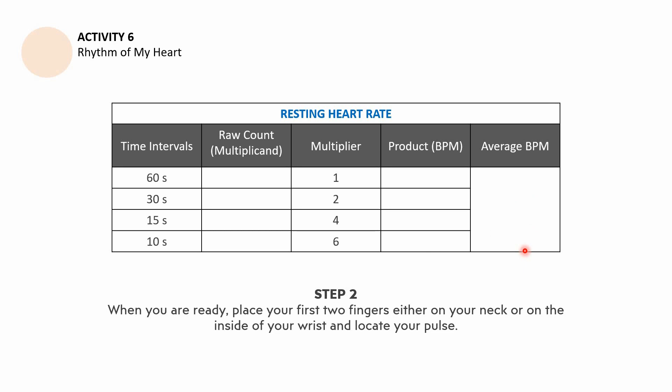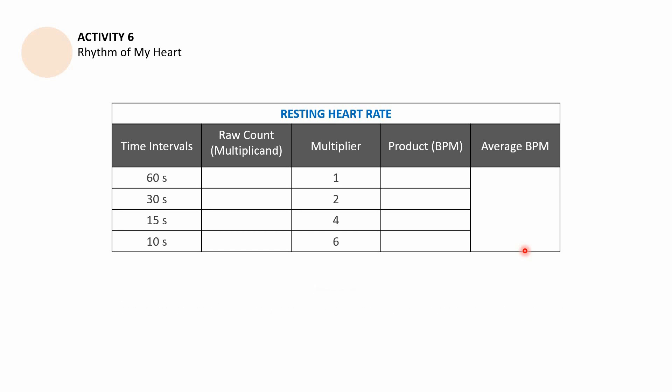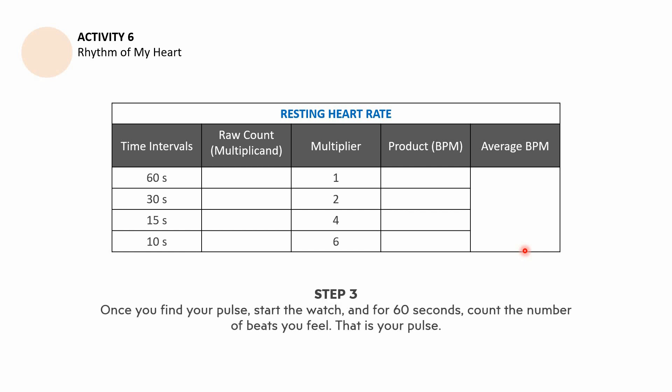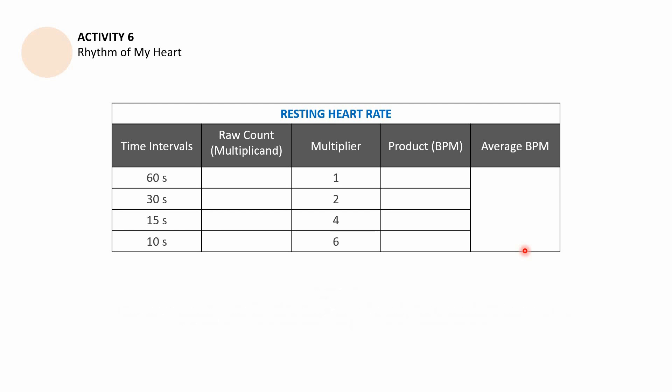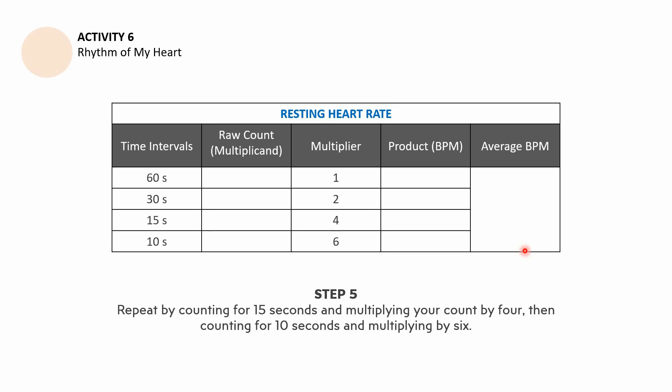When you are ready, place two fingers either on your neck or on the inside of your wrist and locate your pulse. If you need guidance on where to place your fingers, you may message me or I'll discuss it during our synchronous meeting. Once you find your pulse, start the stopwatch and count the number of beats for 60 seconds. You may repeat the experiment for 30 seconds and multiply by 2, then 15 seconds and multiply by 4, then 10 seconds and multiply by 6.